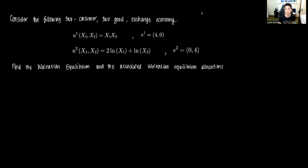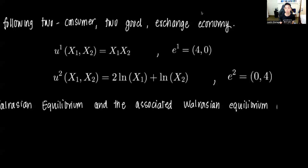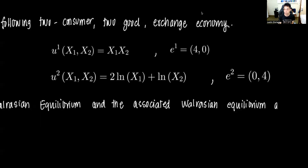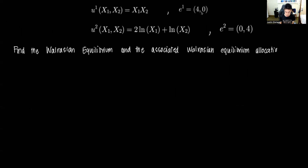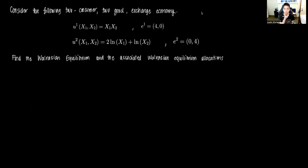Hi everyone and welcome to this video on solving for the Walrasian equilibrium allocations in a simple problem. We have two consumers who choose to consume two particular goods in an exchange economy setting. The utility function for consumer one is x1·x2, and for consumer two it is 2·ln(x1) plus ln(x2). The endowment for consumer one is (4, 0) and for consumer two is (0, 4).